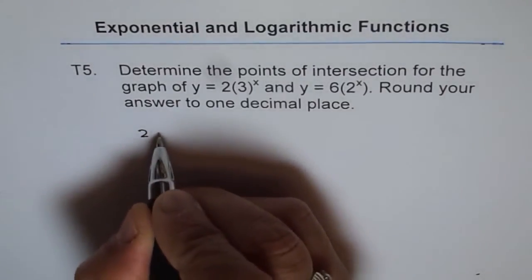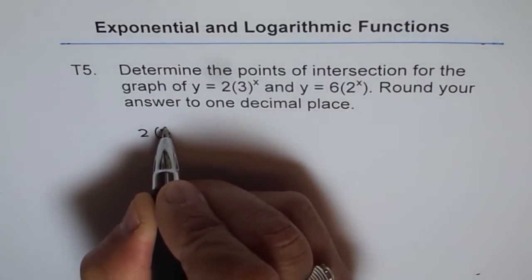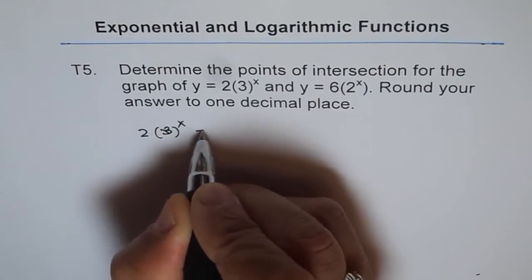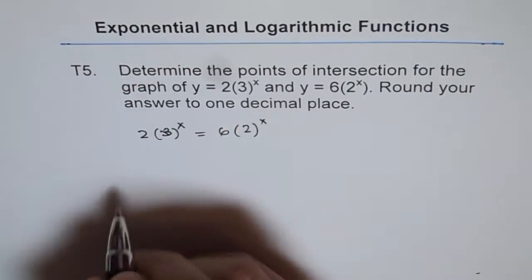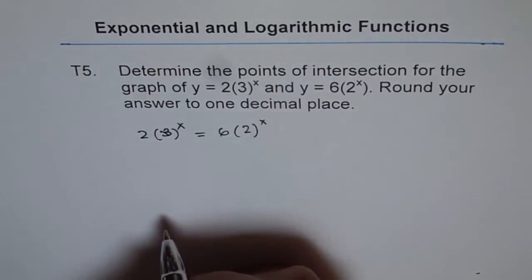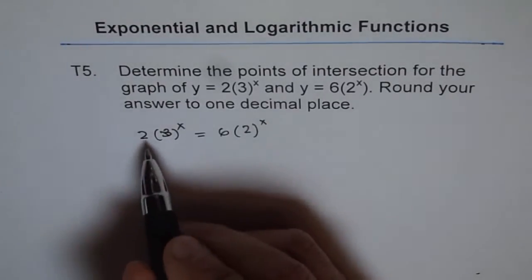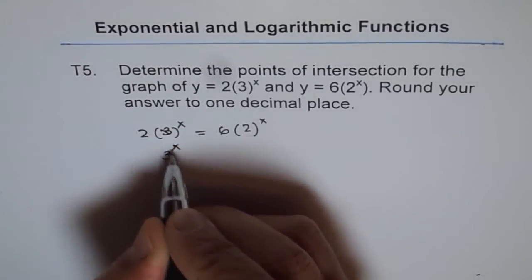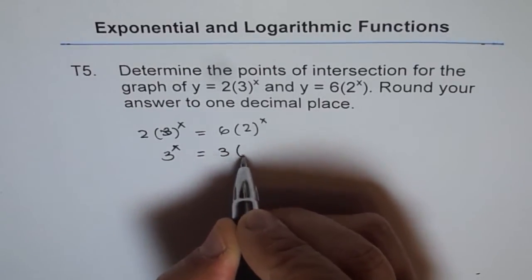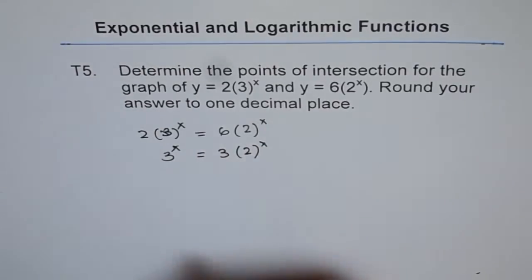So we get 2 times 3 to the power of x should equal 6 times 2 to the power of x. That is how we can start solving this problem. Now you can divide 6 by 2 and you get 3 to the power of x equals 3 times 2 to the power of x.